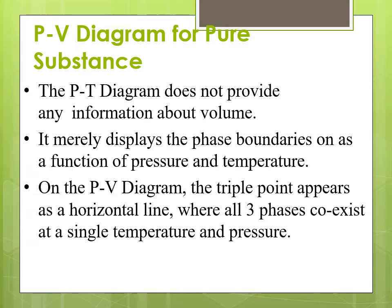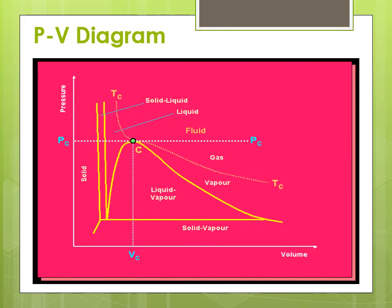Now coming to the PV diagram for pure substances. Compared to the PT diagram, the PT diagram does not provide any information about volume — it merely displays the phase boundaries as a function of pressure and temperature. But in the PV diagram, the triple point appears as a horizontal line where three phases coexist at a single temperature and pressure. In the PV diagram, the x-axis is volume, the y-axis is pressure, C is the critical point, Pc is the critical pressure, and Tc is the critical temperature. The curve shown is named the dome-shaped curve.